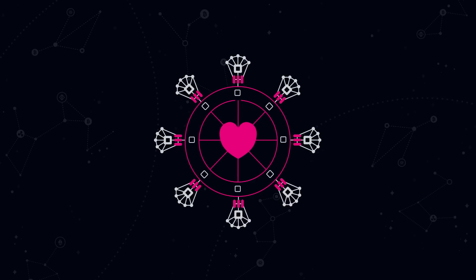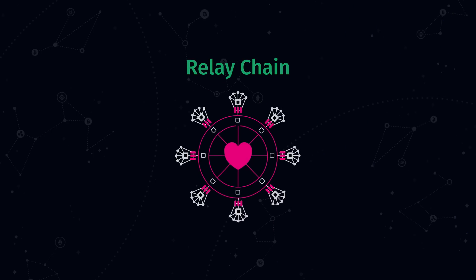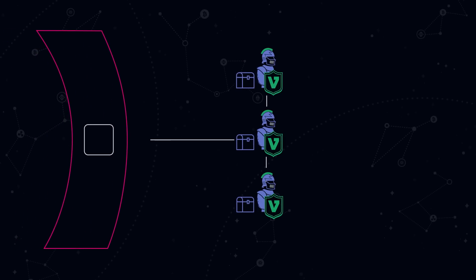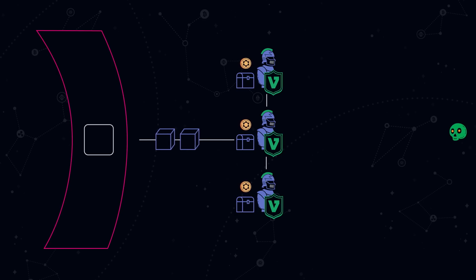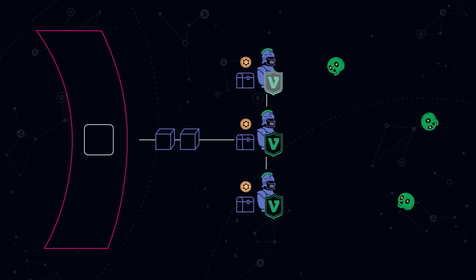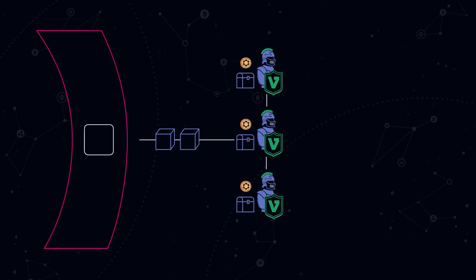At the core of Polkadot beats its heart: the Relaychain. The Relaychain is a nominated proof-of-stake blockchain with validators who stake Polkadot's native DOT tokens, produce new blocks, and secure the network by staking their DOT tokens.